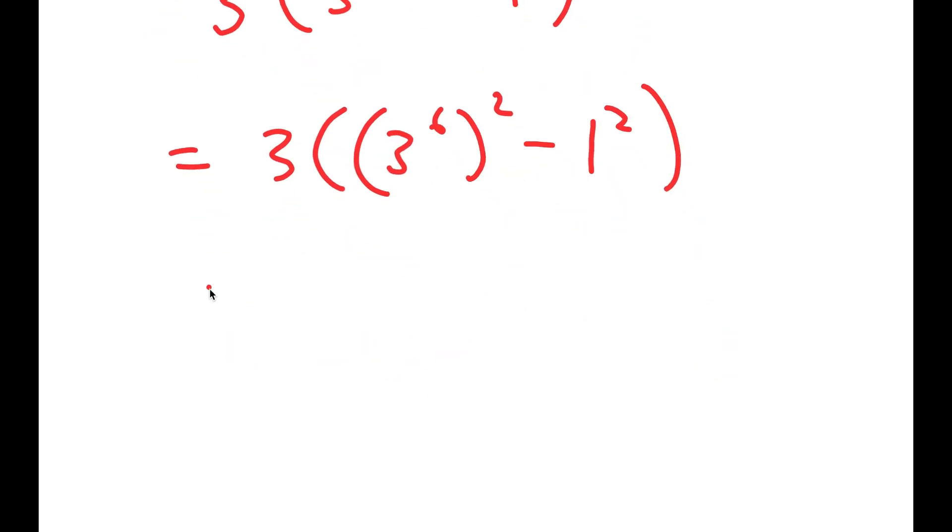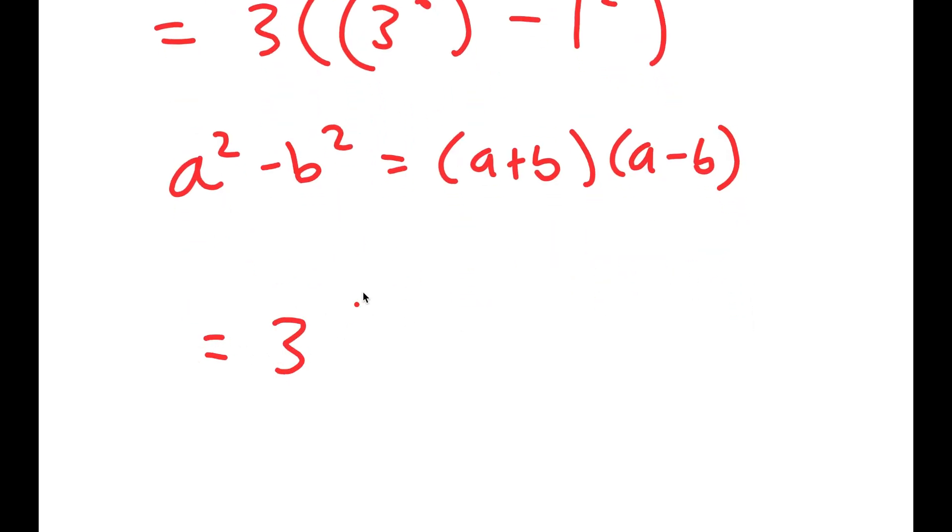And I'm writing this like this because now I can use the property a squared minus b squared is equal to a plus b times a minus b. So this turns into 3 times 729 plus 1 times 729 minus 1.